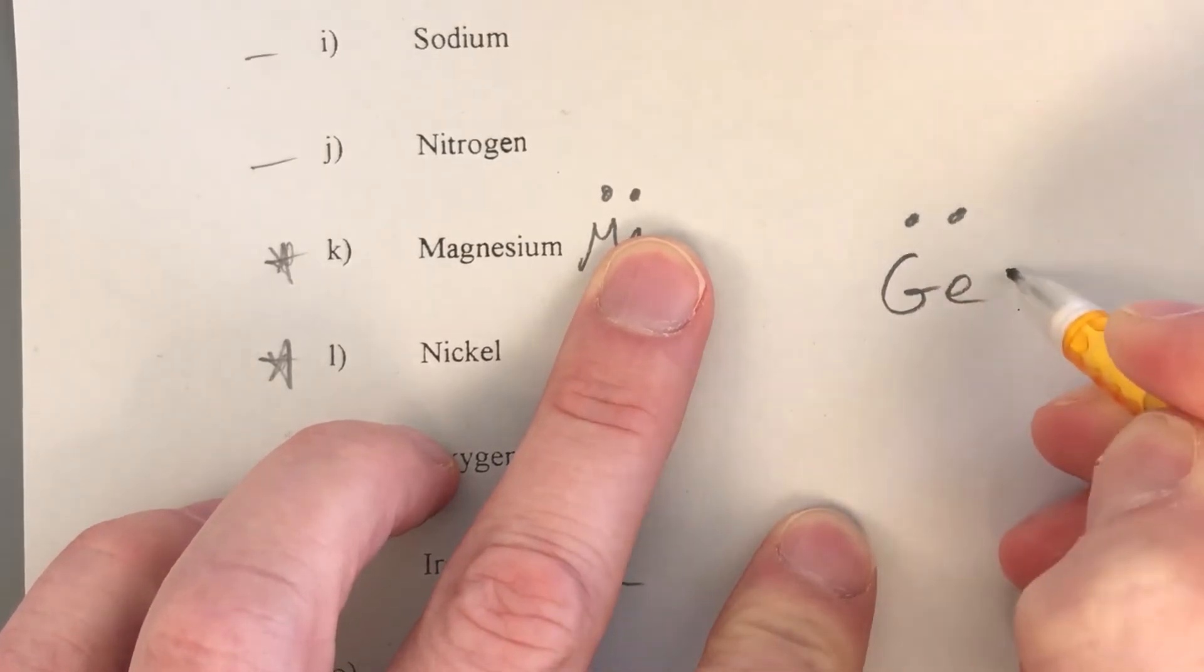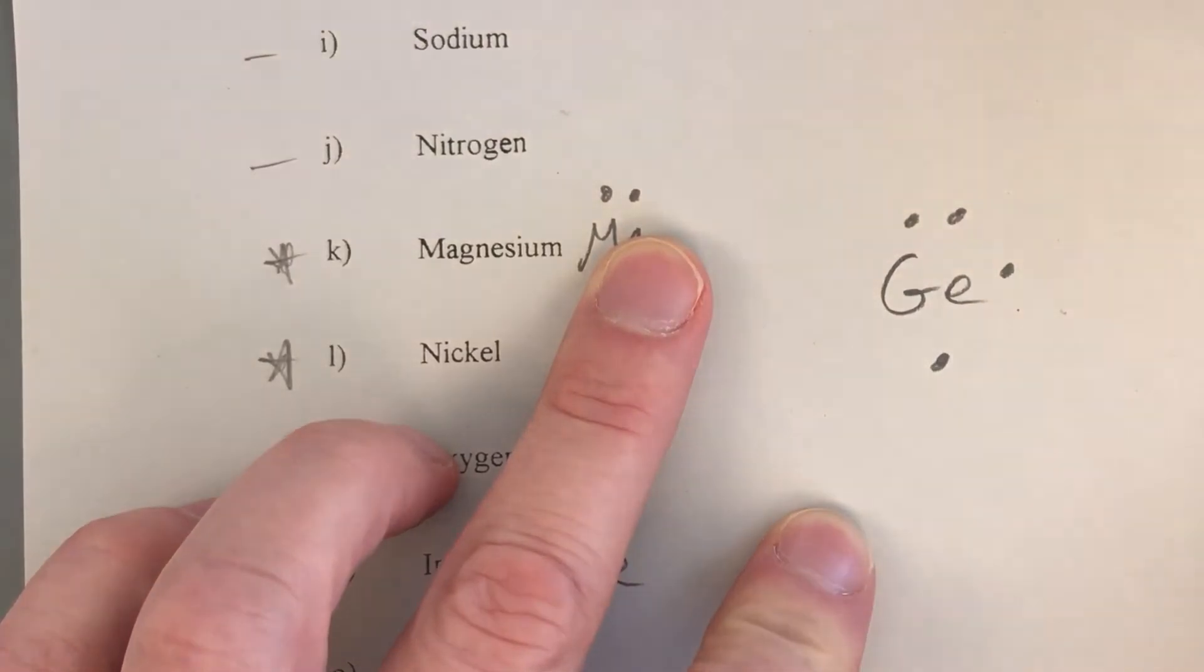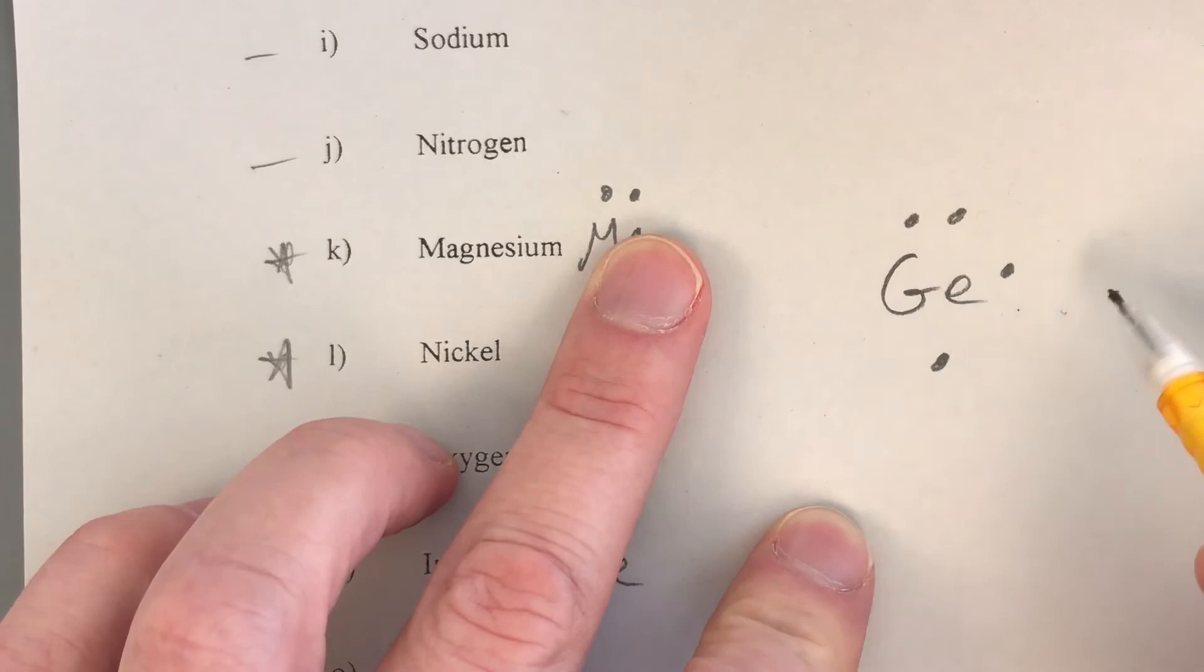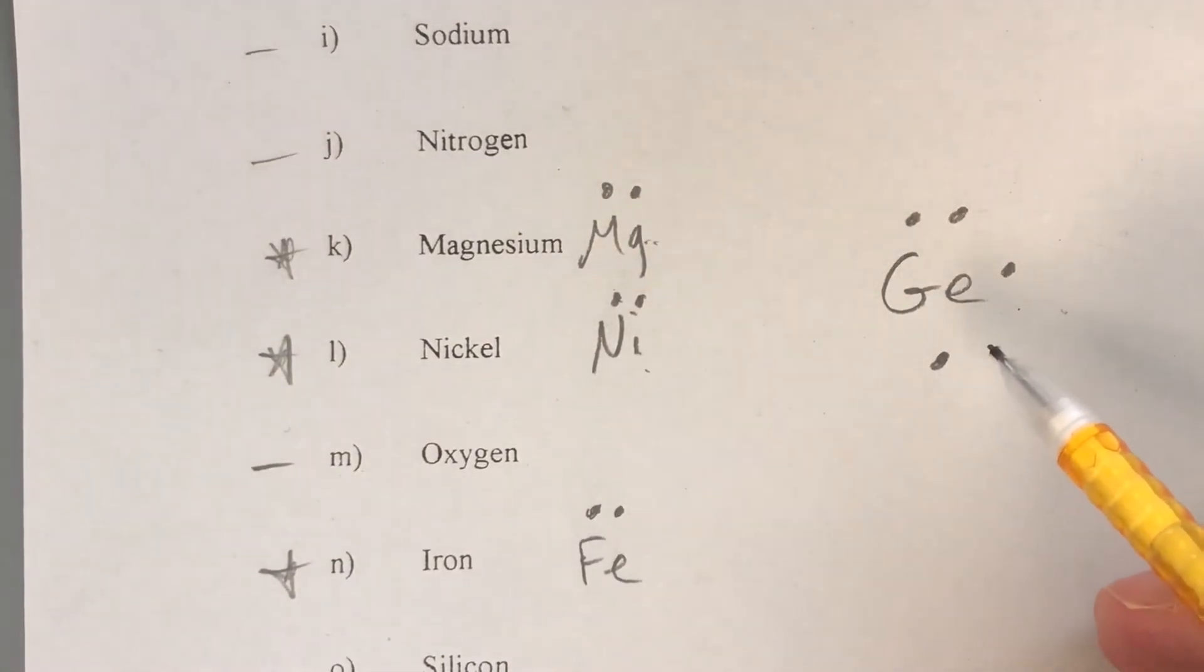For example, Ge, if we just draw that in there for germanium, we would have one, two, and then three, four. In high school chemistry, a lot in the New York State regions they've kind of gone away from going through and going in depth at like the spdf sub orbitals.